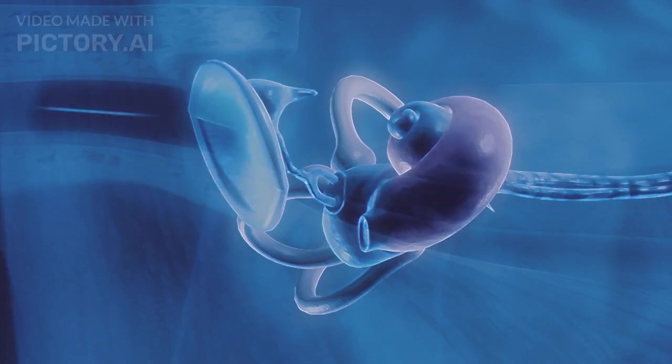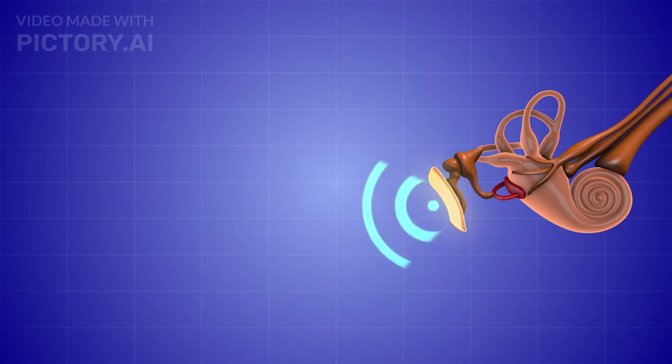These bones function as a lever system, amplifying the vibrations from the eardrum and transmitting them to the oval window of the inner ear. The amplification provided by the ossicles ensures that sound waves can be effectively transferred to the fluid-filled inner ear.